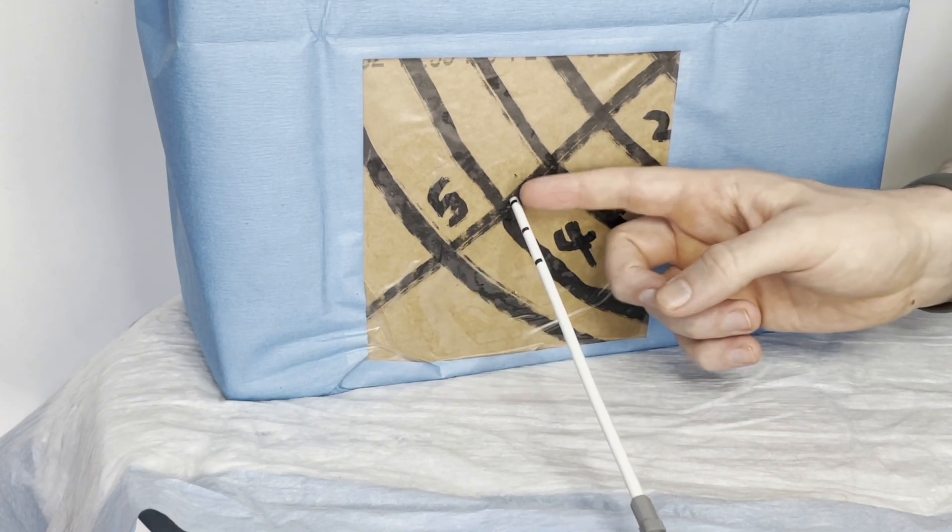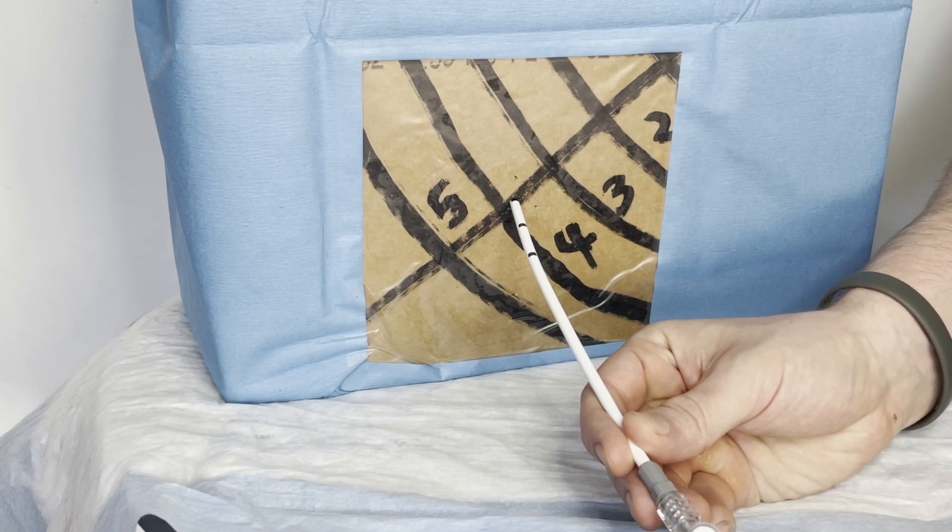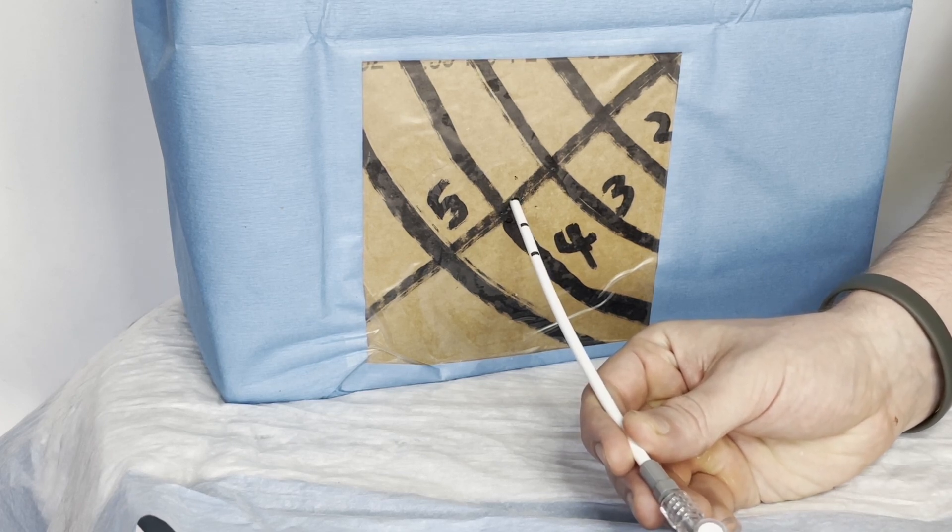And notice these black lines here. We're going to insert to one of these black lines. The patient isn't very big, so we're just going to insert to the first. That'll give us plenty of space.